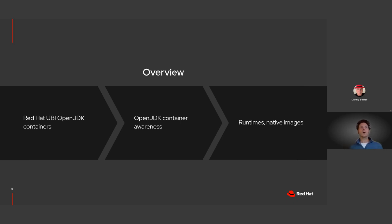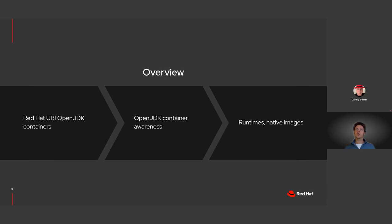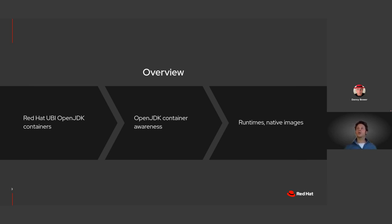So how am I going to structure this talk? First, we'll talk about Red Hat's OpenJDK images. Then we'll move on to OpenJDK container awareness — what it means and why it's useful. We'll conclude with deploying to runtime images and compiling your Quarkus-based applications to native and what benefits that brings.